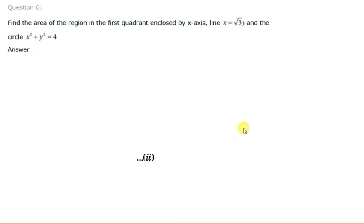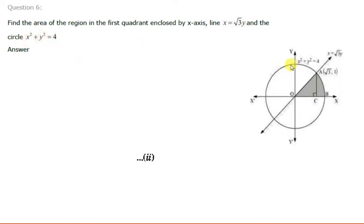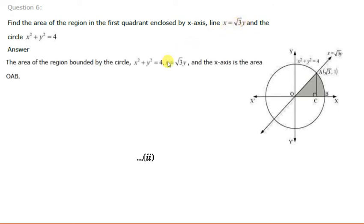The next question is: find the area of the region in the first quadrant enclosed by the x-axis, the line x = √3 y, and the circle x² + y² = 4. Comparing with the standard form, the center is at the origin and r = 2. So we draw a circle with center at origin and radius 2, where the distance OB = 2. The line x = √3 y passes through the origin.